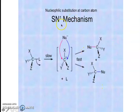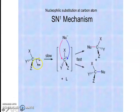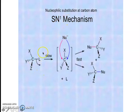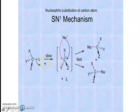Nucleophilic substitution takes place by two mechanisms: SN1 and SN2. In the SN1 mechanism, the substrate has a leaving group attached by a sigma bond. S stands for substitution, N for nucleophilic, and 1 is the order of the reaction. In the first step of SN1, there is a heterolytic cleavage of the C–L bond, where L is the leaving group, giving rise to a carbocation. This step is very slow.